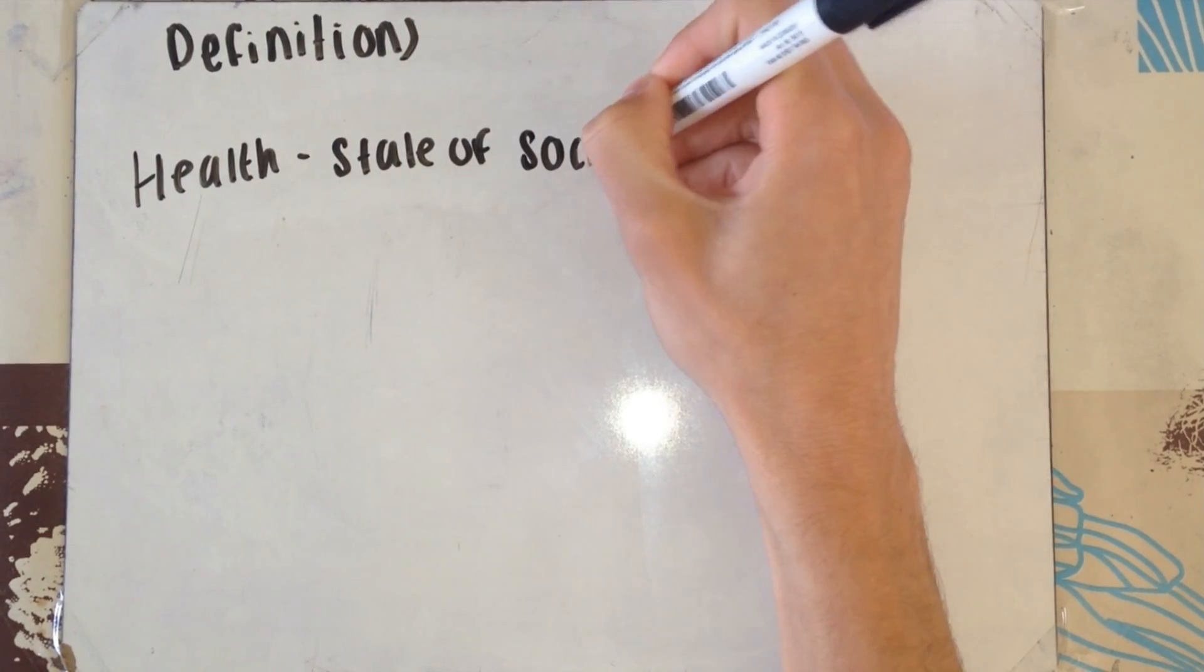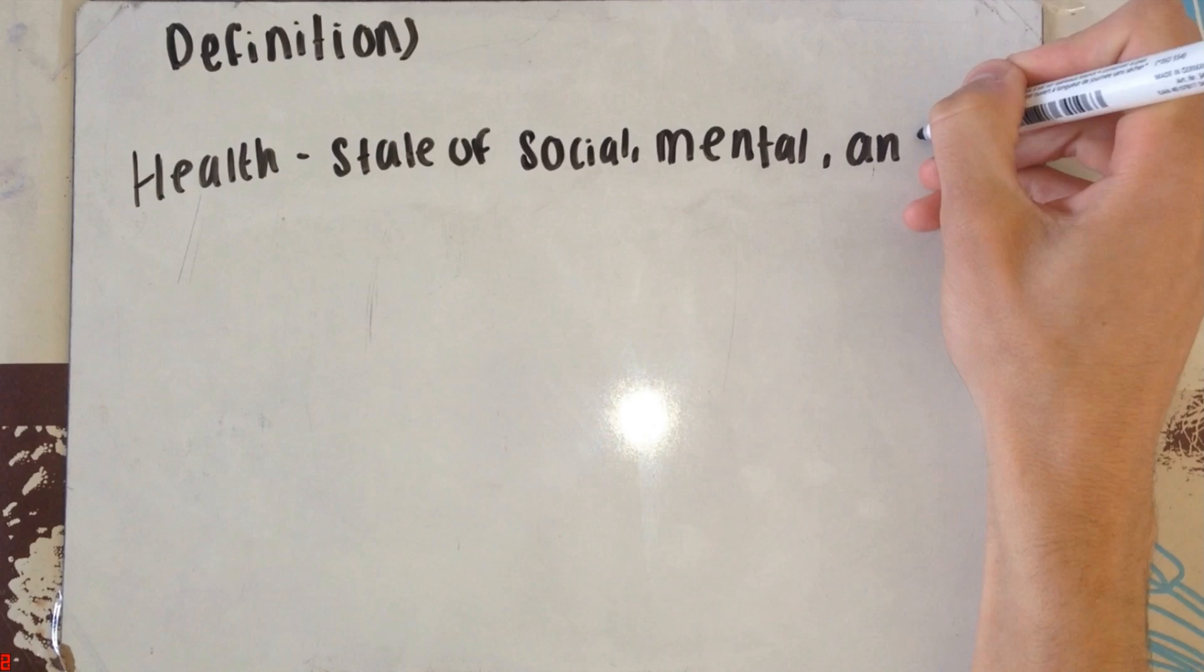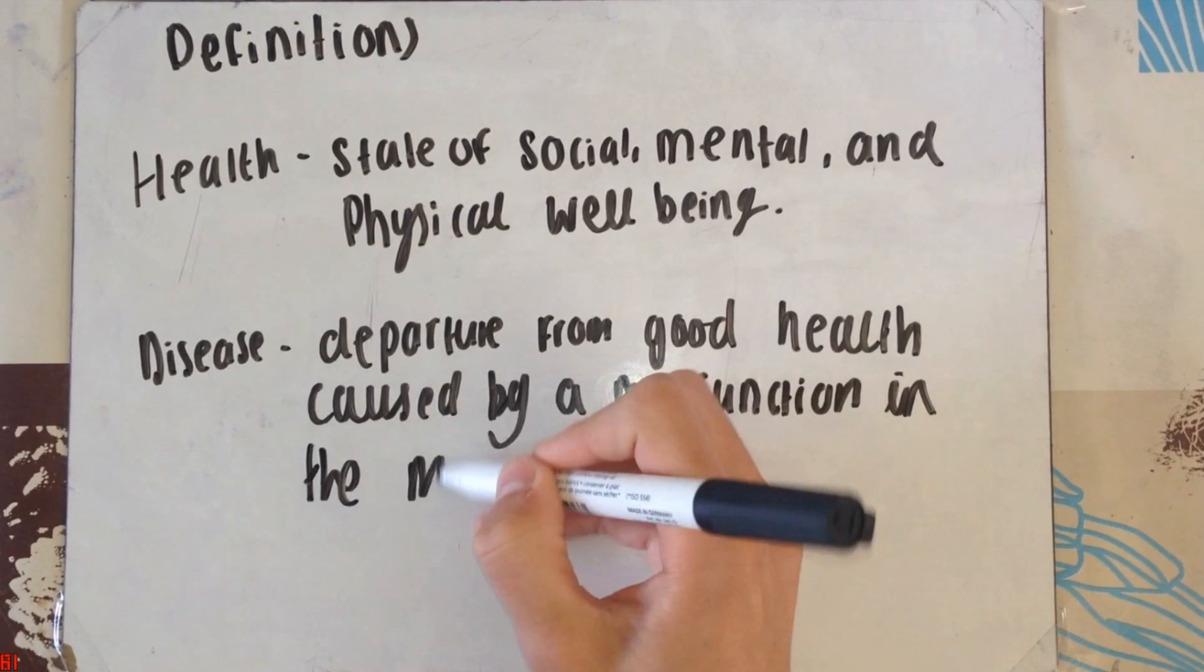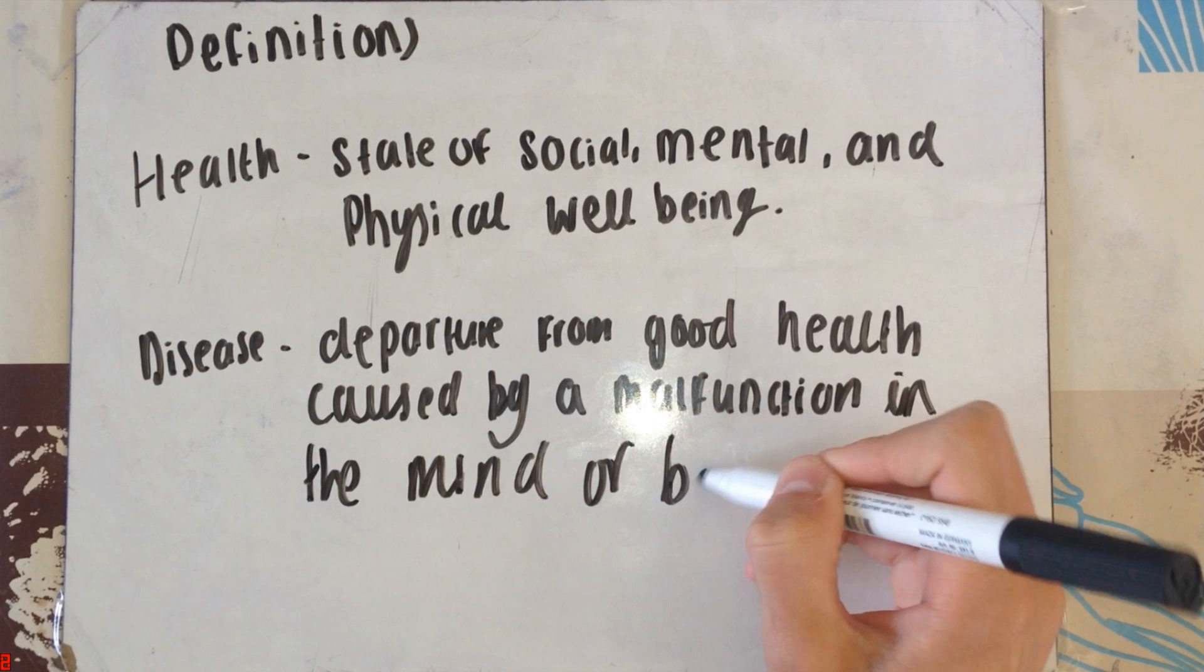We'll start off with definitions. Health is the state of social, mental, and physical well-being, not just being free of disease. Disease is a departure from good health caused by malfunction in the mind or the body.